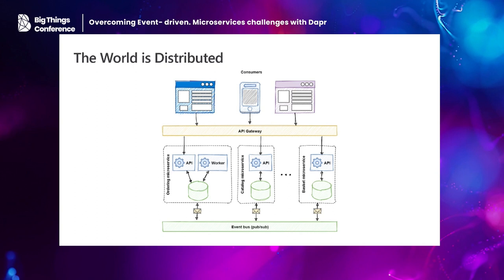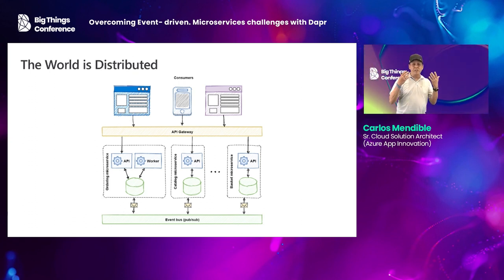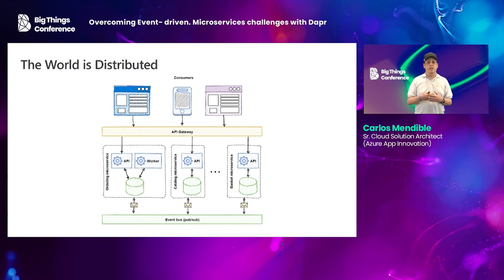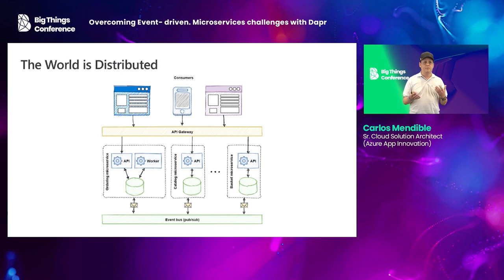What happens when you have this solution for many years and you need to fix some issues? The slightest fix that you deploy can break the entire solution. You may have issues trying to use new technologies, and that starts to be cumbersome. So today we break down these monoliths into different services, but with that come new challenges: how do these services discover each other, how do they speak with each other, and how can we observe these solutions end-to-end?